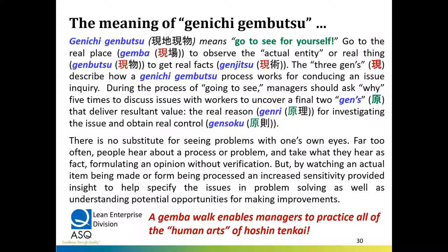Genichi Genbutsu — go to the Gemba, go see for yourself. There are five Gens in two processes: the first three describe the process for going to see, and the last two — Genri and Gensoku — tell you what you'll get: the real reason and real control. There is no substitute for seeing with your own eyes and experiencing the work situation yourself, so you can understand what people are complaining about or say needs to be improved. The Gemba walk enables managers to practice all the human arts of Hoshin tenkai — the deployment of objectives.